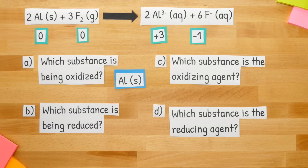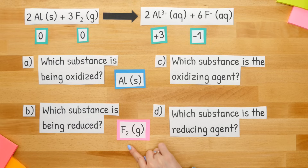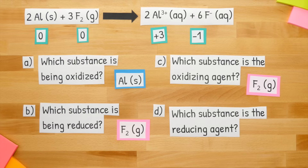Part B: which substance is being reduced? We go back and look at just the reactant that was involved in reduction. Our substance that's being reduced is F2. Part C: which substance is the oxidizing agent? Remember, whatever is being reduced is your oxidizing agent. In Part B we found that the substance being reduced was F2, so F2 is also our oxidizing agent.